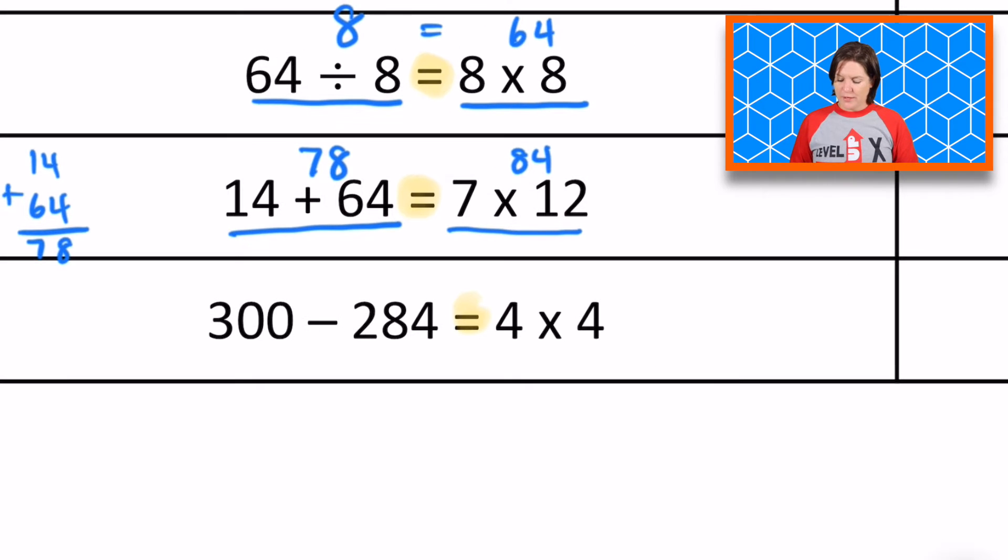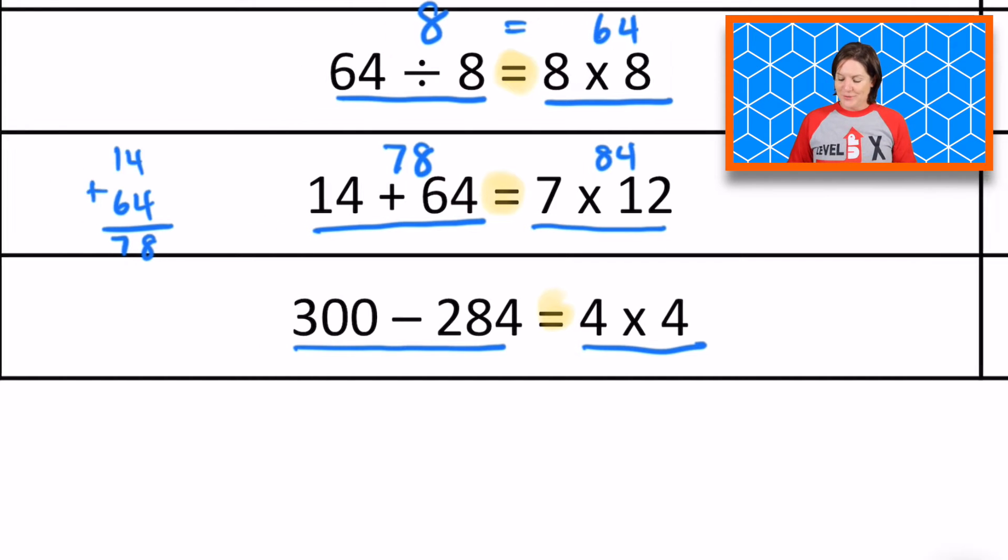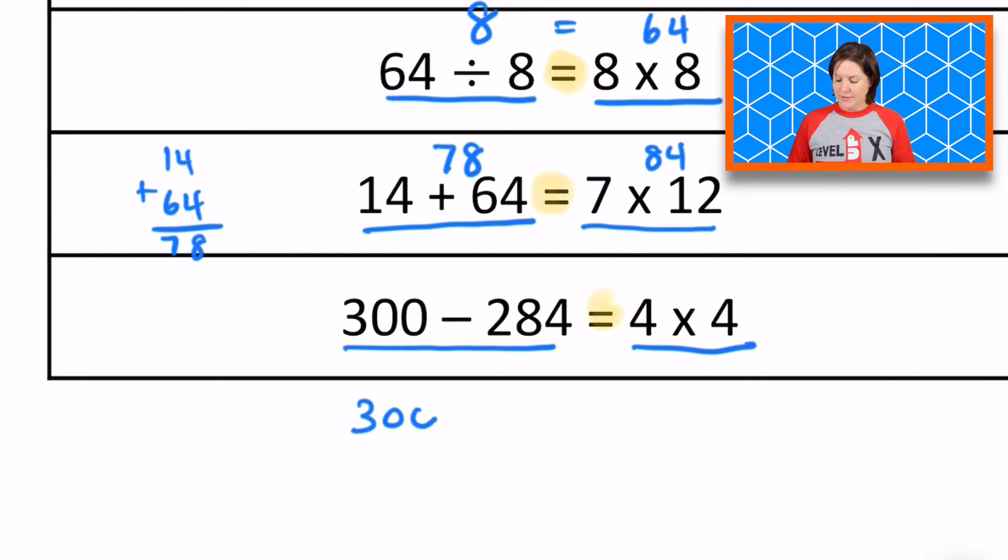And let's check out this last one. So we have 300 minus 284 on the left and we have 4 times 4 on the right.